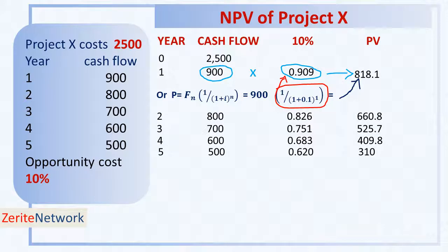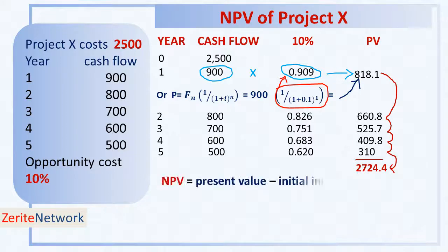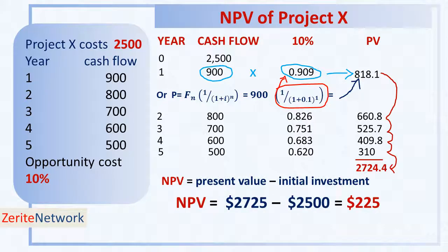Year 2, the cash inflow is $800, with its present value factor, and so on all the way to year 5. Now we add all the present values, and that gives us $2,724.40. So, net present value equals present value — which in this case is $2,725 (rounded) — minus the initial investment of $2,500, giving an answer of $225.